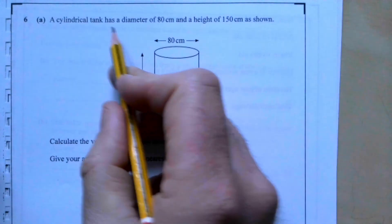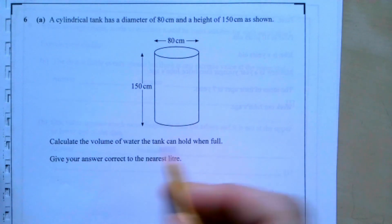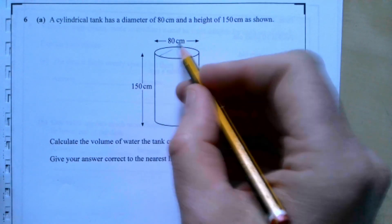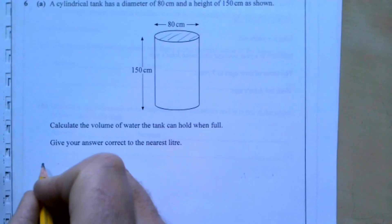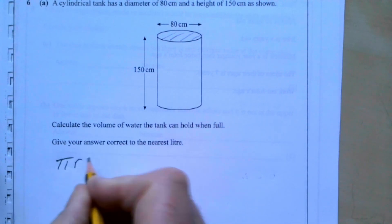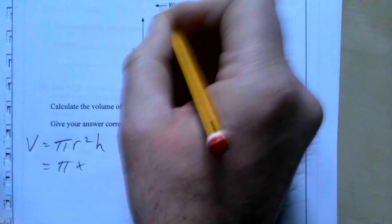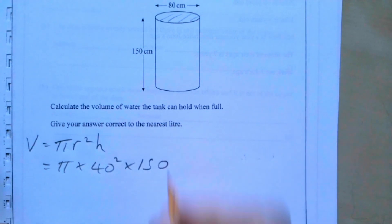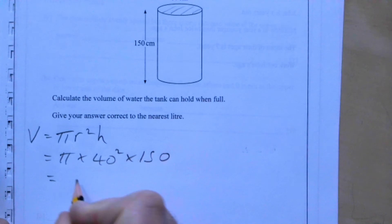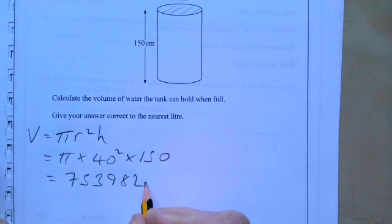Question six: A cylindrical tank has a diameter of 80 cm and a height of 150 cm. The volume is pi r squared times h, so pi times 40 squared times 150. Putting that into the calculator gives 753,982.24 cubic centimetres.